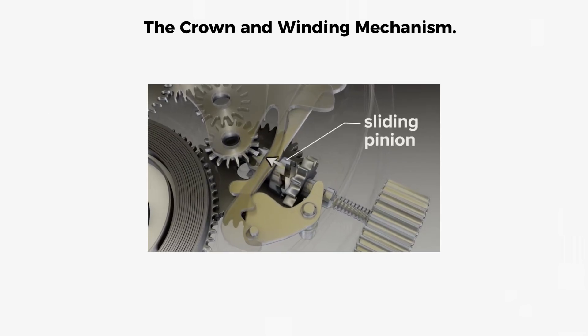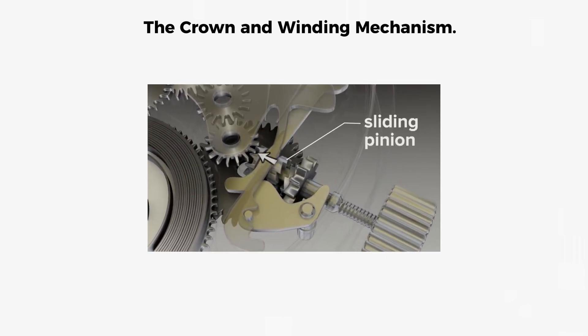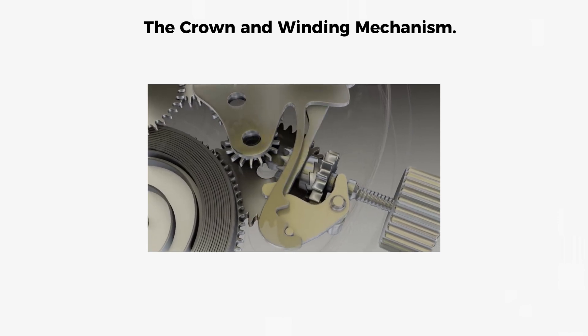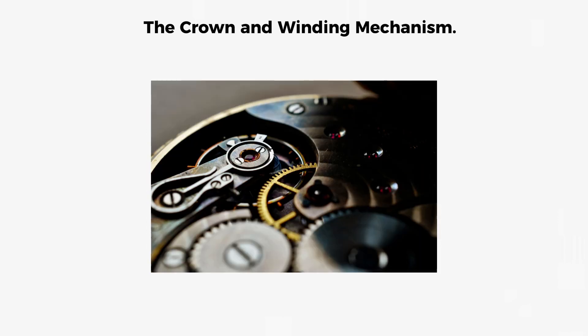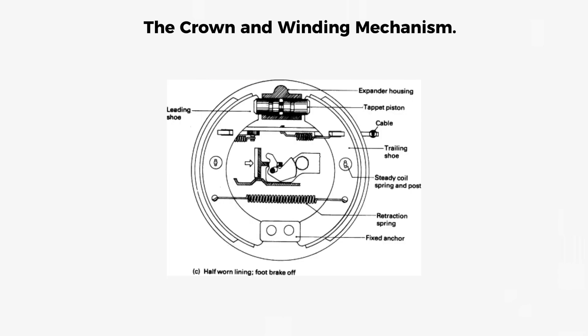When the crown is pushed in for winding, a gear called the sliding pinion meshes with a set of gears connected to the mainspring arbor. Turning the crown rotates these gears, which wind the mainspring tighter and tighter, storing energy. The ratchet wheel prevents backward rotation, so the spring stays wound until its energy is gradually released through the barrel.